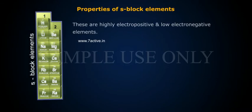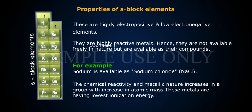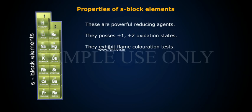Properties of S block elements: These are highly electropositive and low electronegative elements. They are highly reactive metals; hence they are not available freely in nature but are available as their compounds. For example, sodium is available as sodium chloride (NaCl). The chemical reactivity and metallic nature increases in a group with increase in atomic mass. These metals have the lowest ionization energy, are powerful reducing agents, and possess +1 and +2 oxidation states.